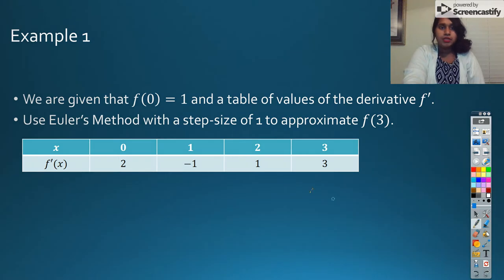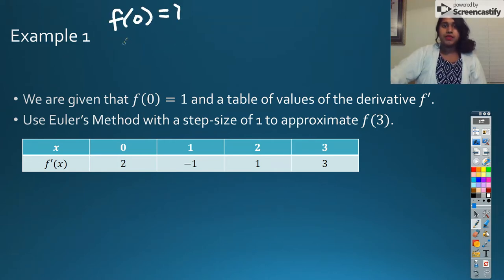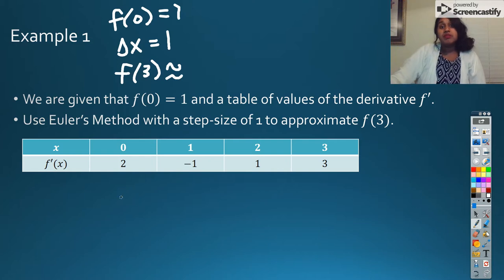So here's my first example. We are given that F(0) = 1, and a table of values gives us our derivative. Using Euler's method with step size 1, approximate F(3). So what important information was I just given? Well, I was given that F(0) equals 1. I was given that we have a step size or a delta X of 1. I know that I'm looking for F approximate of 3. So the biggest thing that I want to do is create a table.